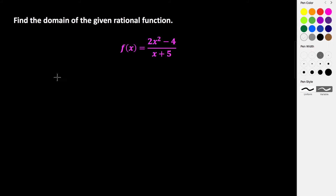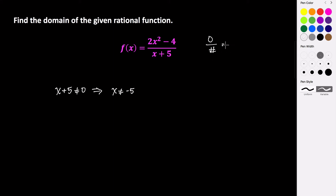So we know that x plus 5 is not allowed to equal 0. So if we subtract 5, we get that x is not allowed to equal negative 5. This is really the only domain restriction in this problem, because even if we were to find a value that makes the numerator 0, we are allowed to have 0 divided by some number — this gives us just 0. We just can't have the opposite be true. So our domain would be the set of all x such that x is not equal to negative 5.